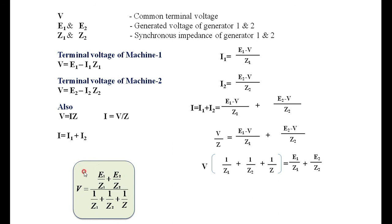Once we know the value of V, and knowing the generated voltages of generators 1 and 2, we can calculate the currents I1 and I2 — the load currents shared by alternator 1 and alternator 2. The apparent power delivered by alternator 1 is V·I1, and by alternator 2 is V·I2. If you want active power, take the real part of the apparent power: P1 equals V·I1·cos(φ1) and P2 equals V·I2·cos(φ2).